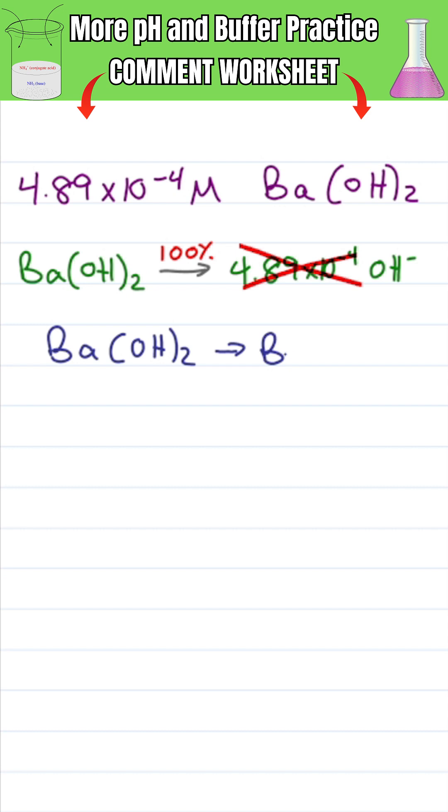This breaks down to give me one barium and two hydroxide. So we need to double the initial concentration.